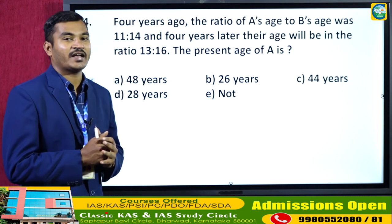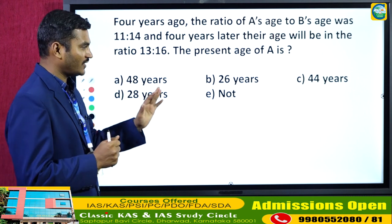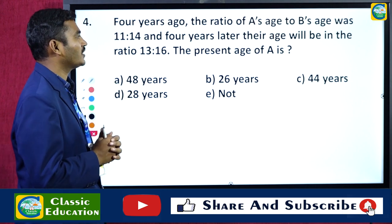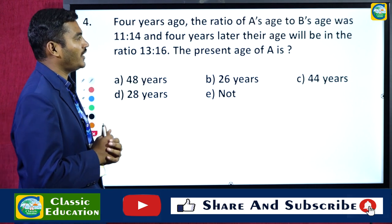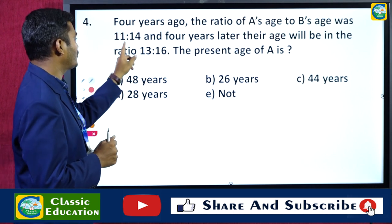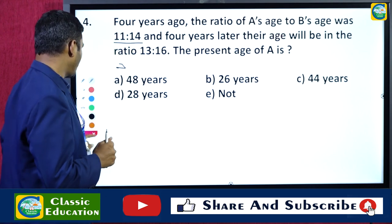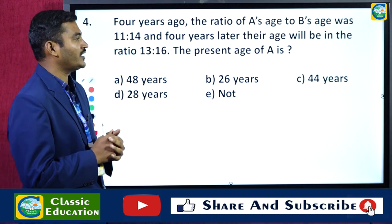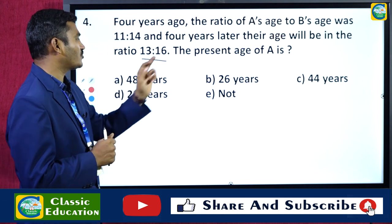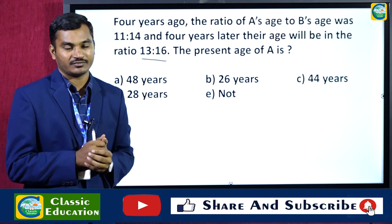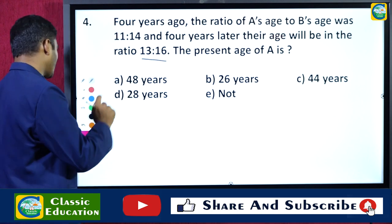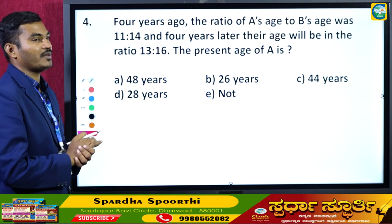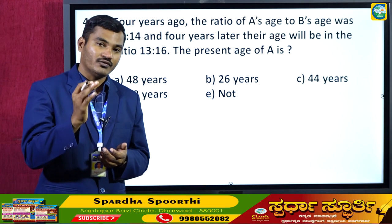This question has come in the SBI exam. We are discussing SBI previous year questions. What it is telling me: 4 years ago, the ratio of A's age to B's age was 11 is to 14. And 4 years later, their age will be in the ratio 13 is to 16. Find the present age of A. Before I tell you how to solve it within 5 seconds, let me give one important instruction regarding ages.